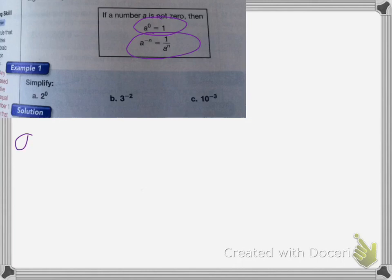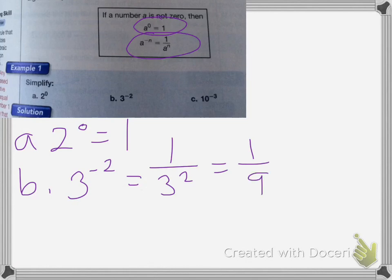So for a, 2 to the 0 power, that's going to be equal to 1. b, 3 to the negative 2nd power, that's going to equal 1 over 3 squared, which is equal to 1 ninth. And then c, 10 to the negative 3rd power, equals 1 over 10 to the 3rd power, which equals 1 over 1,000.